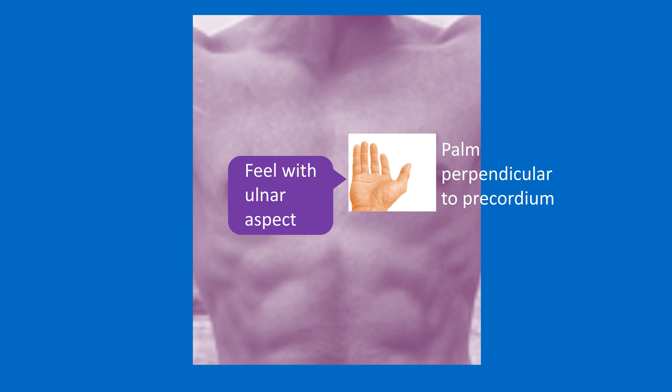Left parasternal heave is felt with the ulnar aspect of the palm, kept perpendicular to the precordium, and is a feature of right ventricular hypertrophy. Hyperdynamic left precordial pulsations which are not so forceful can be noted in atrial septal defect with a large left-to-right shunt, even without severe pulmonary hypertension and right ventricular hypertrophy.